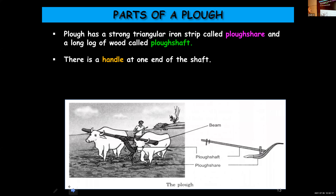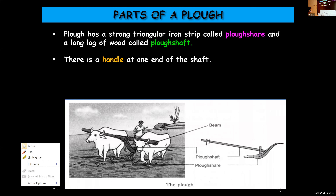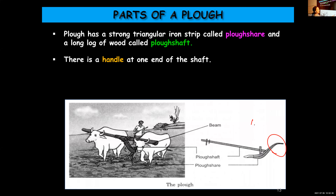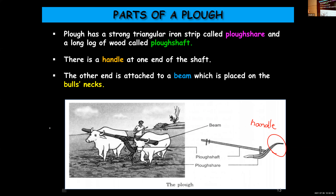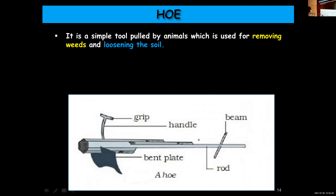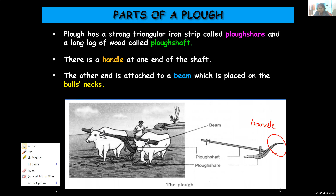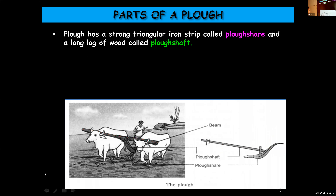There is a handle at one end of the plow shaft. The other end is attached to a beam — you can see the beam in the picture. The beam will be fixed on the bull's necks. Once again: the plow has two main parts — a strong triangular iron strip called plow share, and a long log of wood called plow shaft.